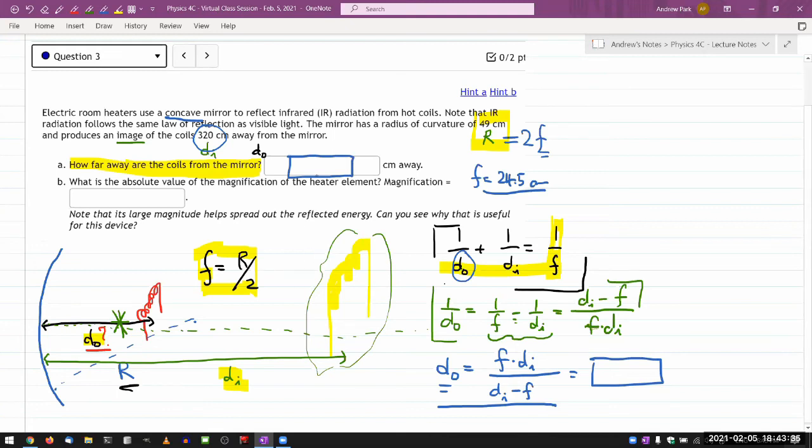But I'm going to assume that I have an answer to DO from there. Part B asks, what is the absolute value of the magnification of the heater element? It's asking for the absolute value. Your textbook does derive the formula for the linear magnification. That magnification is given by minus DI over DO. And for the geometric argument leading to that, read the textbook or watch the lecture.